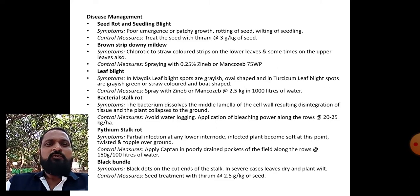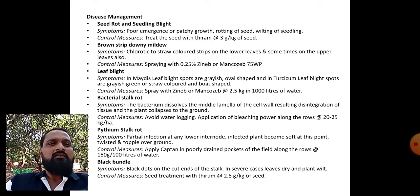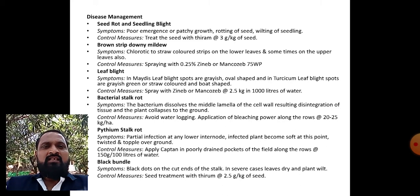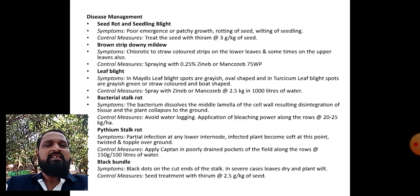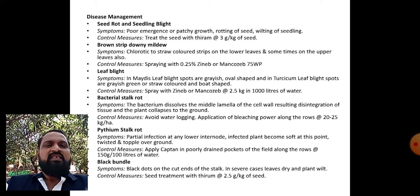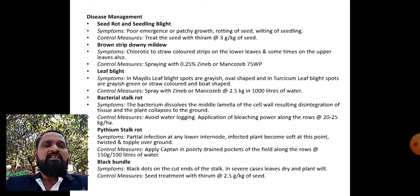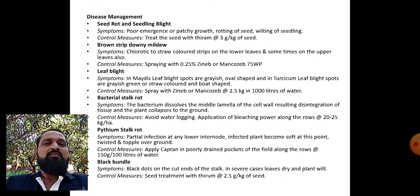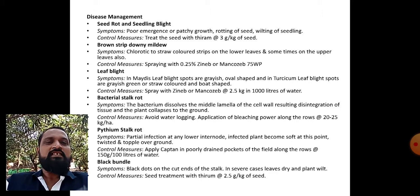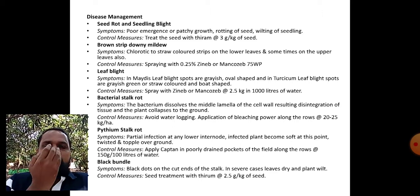Brown stripe downy mildew: chlorotic to straw-colored strips on the lower leaves and sometimes on the upper leaves also are observed. To control, spray 0.25 percent Zineb or Mancozeb 75 WP. Leaf blight: Maydis leaf blight spots are grayish oval-shaped, and Turcicum leaf blight spots are grayish green or straw-colored and boat-shaped. Control measure: spray with Zineb or Mancozeb at the rate of 2.5 kg in 1000 liters of water.